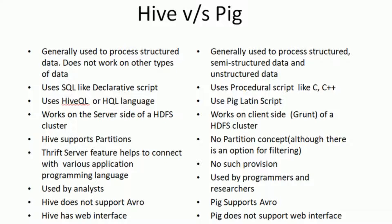Hive is used by analysts, whereas Pig is used by programmers and researchers. Regarding Avro — in big data we deal with Avro format — Hive does not support Avro, whereas Pig supports the Avro concept and you can use the Avro format in Pig.